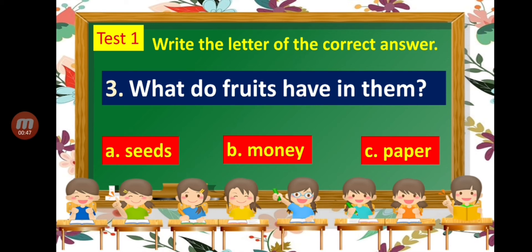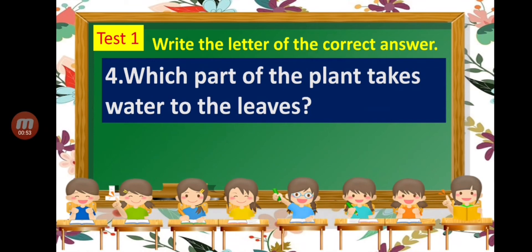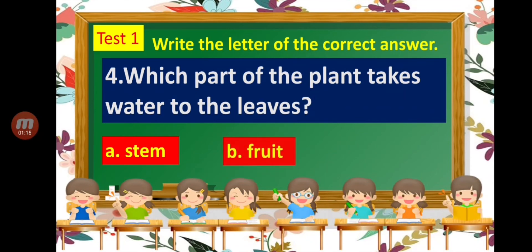Number four: which part of the plant takes water to the leaves? A — stem. B — fruit. C — leaves.